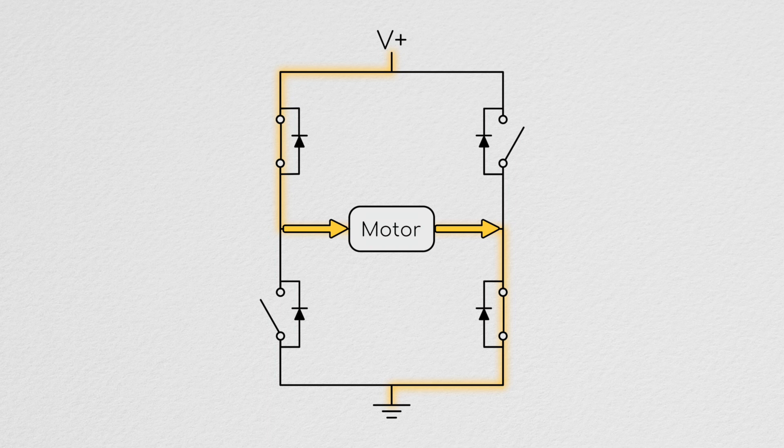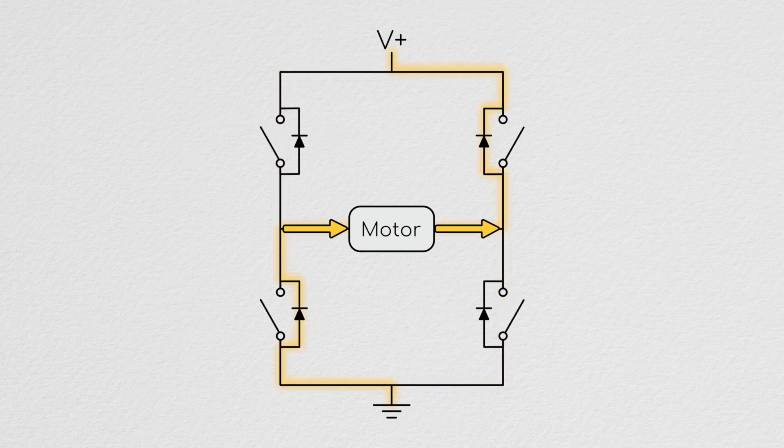During the unforced phase of hard switching, both the high and low MOSFETs are opened. Due to the inductance of the motor, current will be forced to continue flowing from left to right in the motor. Thus it will be pulled up from ground via the left low side MOSFET's diode and forced back up into the battery or power supply via the right high side MOSFET's diode.